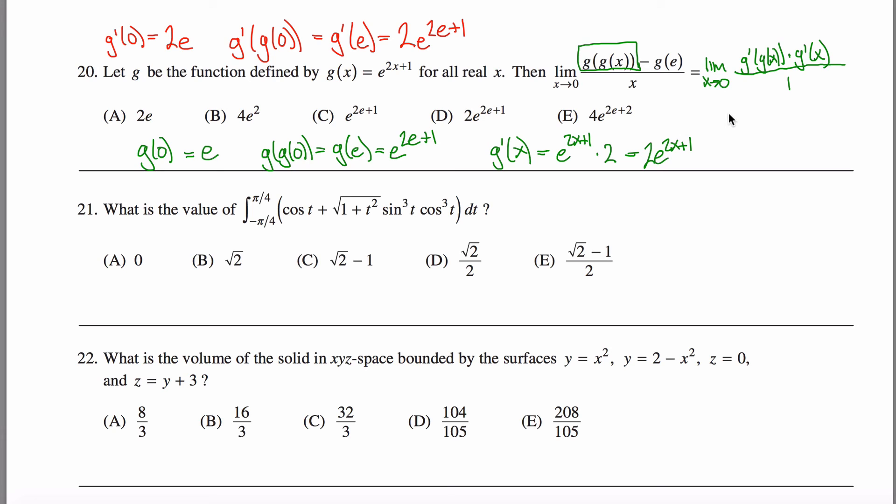So this limit right here is the limit as x approaches zero. To evaluate this limit, I already did all that stuff. It would be the product of g prime of g of x, which is this guy, 2e to the 2e plus 1, times g prime of x, which is 2e. So I get here, and I'm like, oh, I don't see that anywhere.